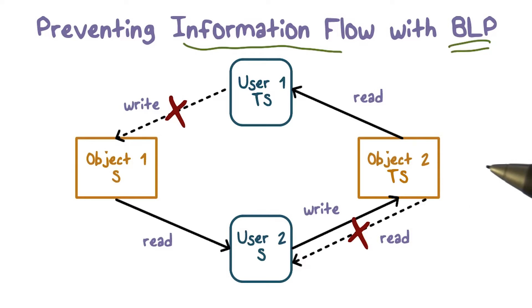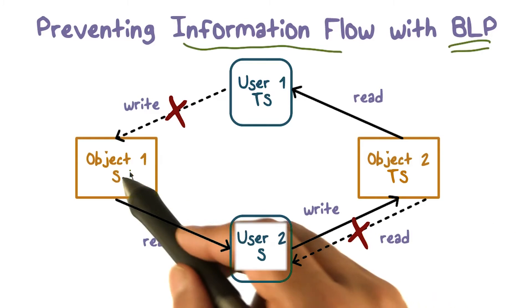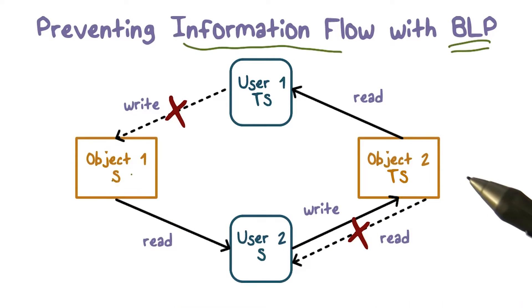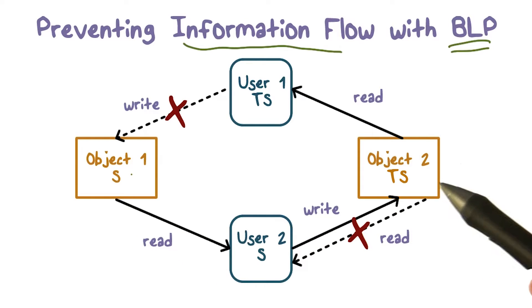So we say we have an object, this is a top secret object. So we have a top secret object two is TS. This is more sensitive information. We never want this information to go and end up in an object that has level is only secret.